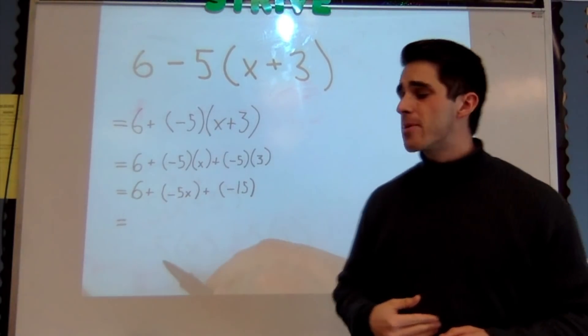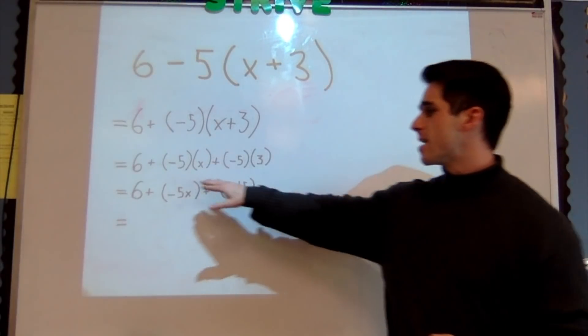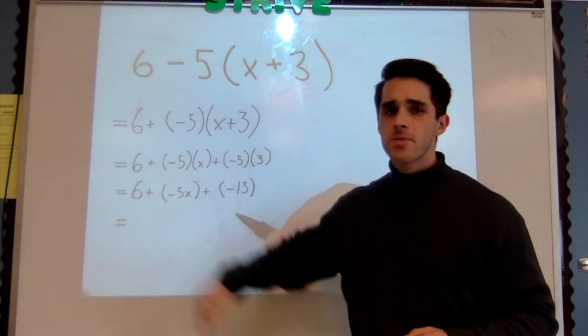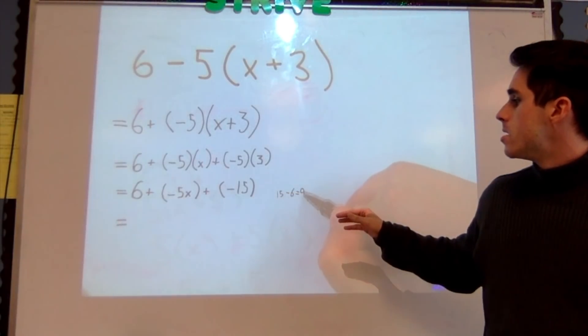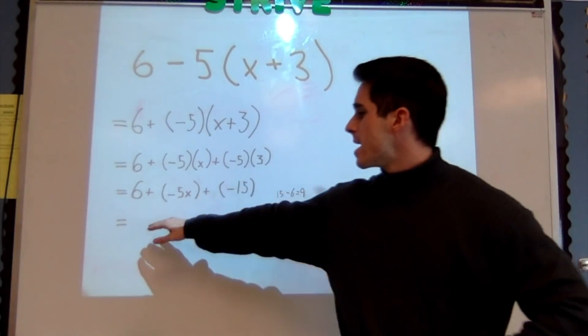I'm going to find that by taking 15 - 6, it's going to be 9, and I know it's going to be negative, so I'm going to write -9.